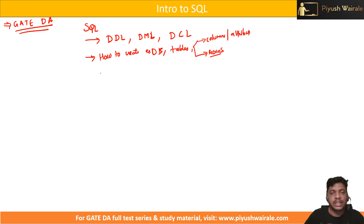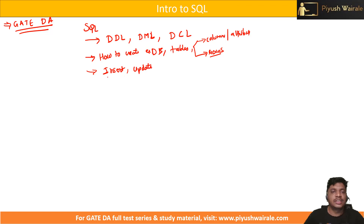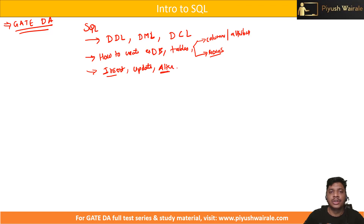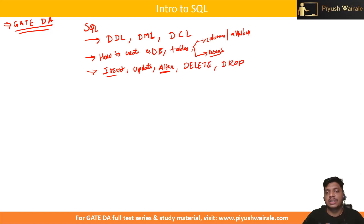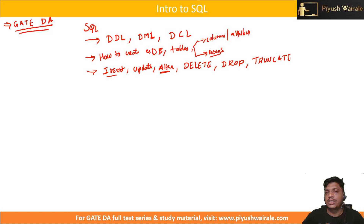How to create a table, how to insert a row in a particular table, how to update a row in a particular table. We are going to discuss the insert statement, update statement, alter statement. Also how to delete a particular record — delete statement. How to drop a particular record or table. Difference between delete, drop, and truncate.